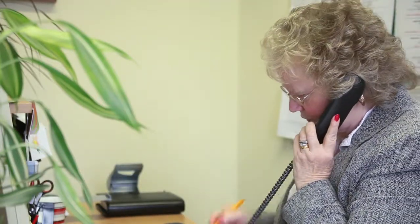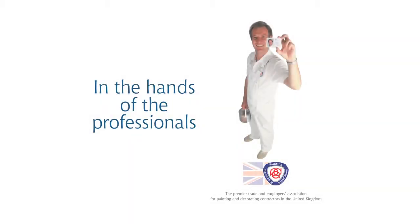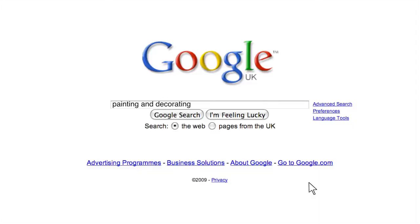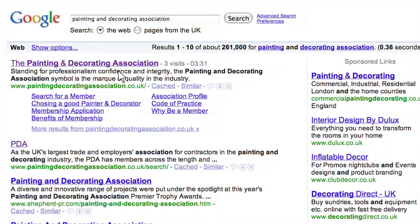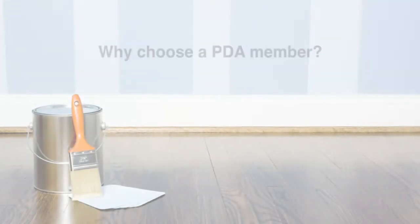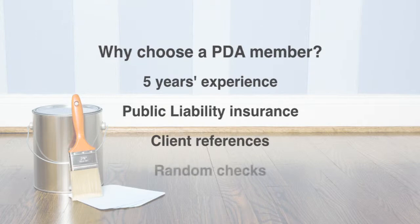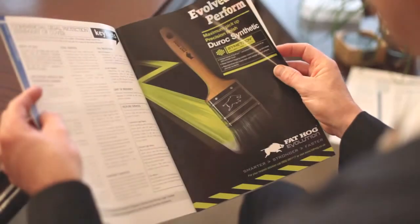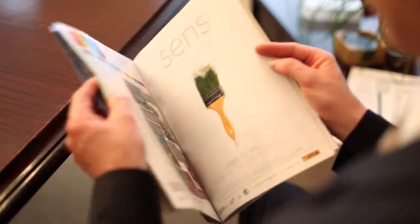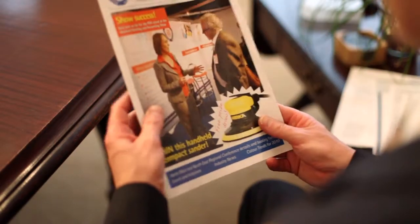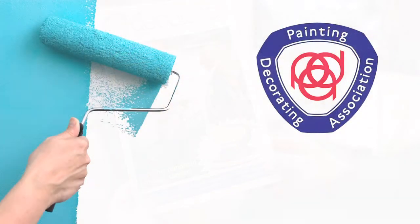I think out there in this big wide world today with lots of different industries and tradesmen out there, people are looking to use a quality tradesman — a painter and decorator from the PDA. They can click onto the PDA website, they can find the decorator on there. It tells them all the criteria of the decorator, what they can do, what their speciality trades are, and if during the job or after the job there's a dispute with the client or the decorator, we have a board of people who can go out and arbitrate the job, inspect the job and make a report on the work that's been done.